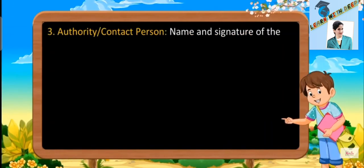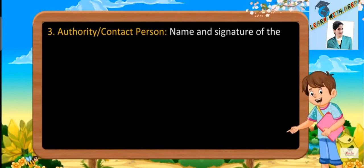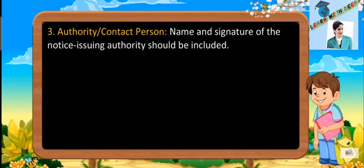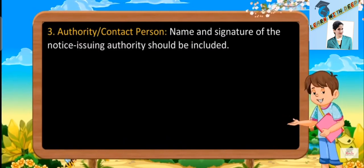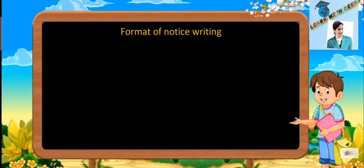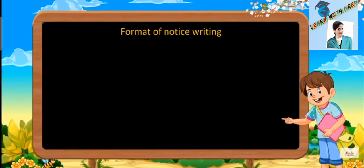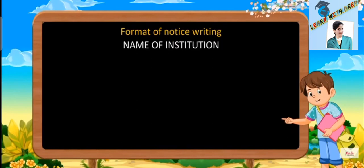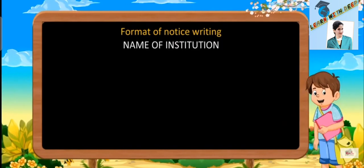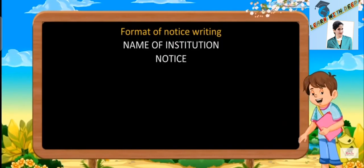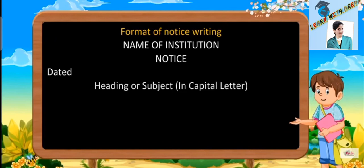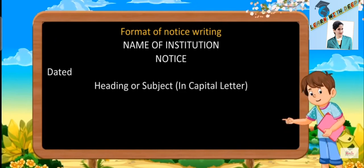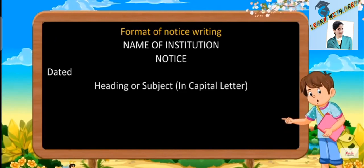The name and signature of the notice issuing authority should be included. Format of notice writing: Name of institution, then 'Notice', then Dated, followed by the Heading or subject in capital letters.